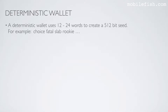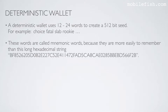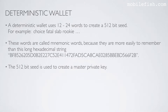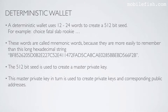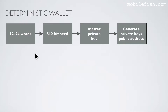A deterministic wallet uses 12 to 24 words to create a 512-bit seed — for example the words choice, fatal, slap, rookie, etc. These words are called mnemonic words because they are more easily remembered than a long hexadecimal string. The 512-bit seed is used to create a master private key. This master private key in turn is used to create private keys and corresponding public addresses.